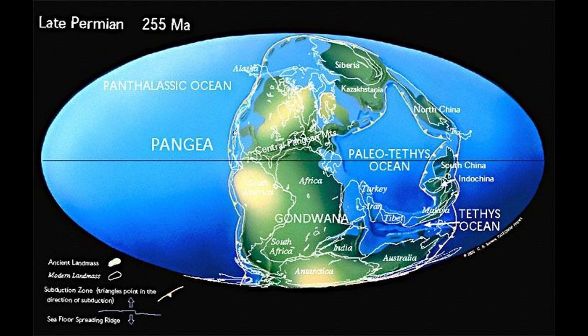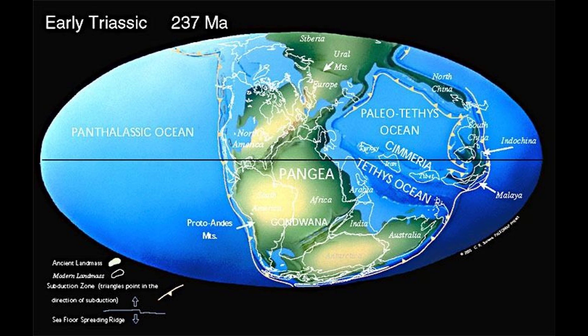Vast deserts covered western Pangaea during the Permian as reptiles spread across the face of the supercontinent. 99% of all life perished during the extinction event that marked the end of the Paleozoic era.